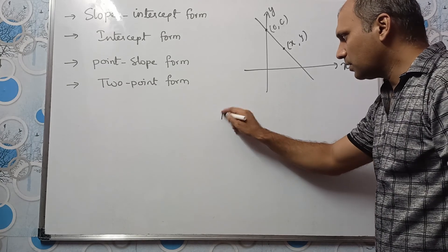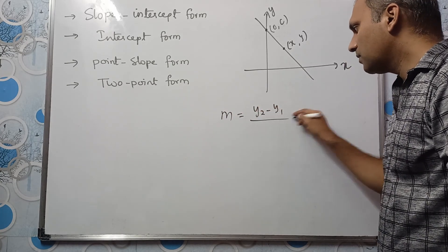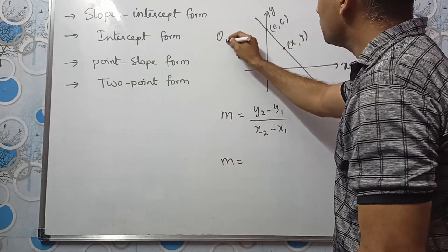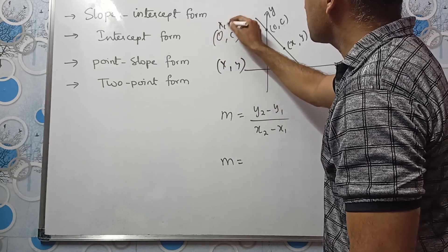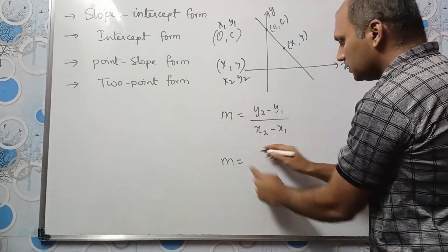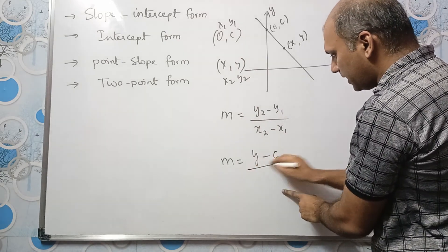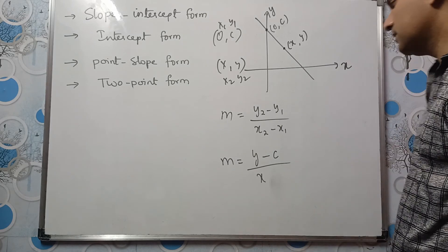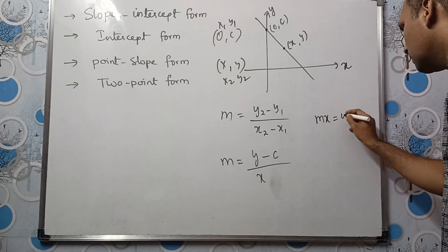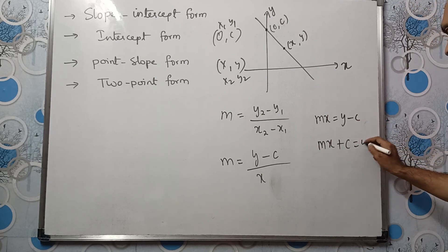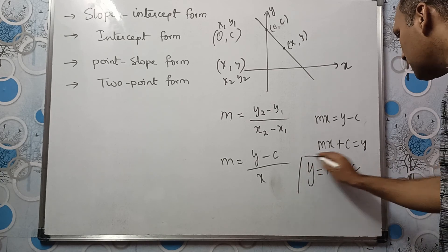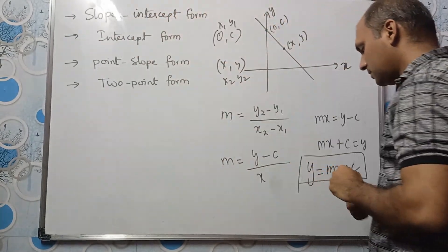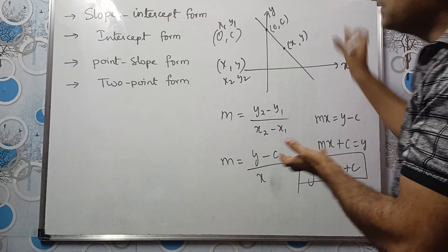Sending x to the other side: mx = y - c. Sending c to the other side: mx + c = y, or y = mx + c. This is the slope-intercept form — the equation of a straight line. Here m is the slope and c is the y-intercept, not x-intercept.